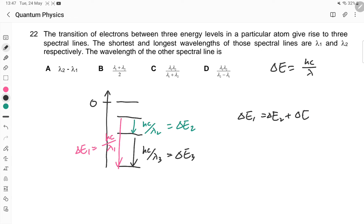You can skip this step, I mean you can straight away write hc/λ₁ equals hc/λ₂ plus hc/λ₃. Then you have 1 over - we want to find λ₃, so let's make that a subject.